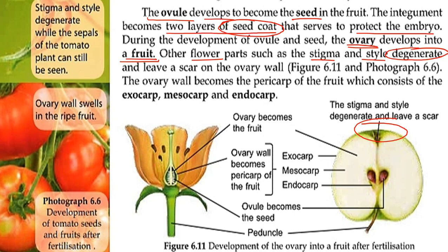You can see this scar on a fruit — for example, on an apple, there is a mark at the bottom. This scar is actually from the stigma and style that have degenerated. The ovary wall becomes the pericarp of the fruit.